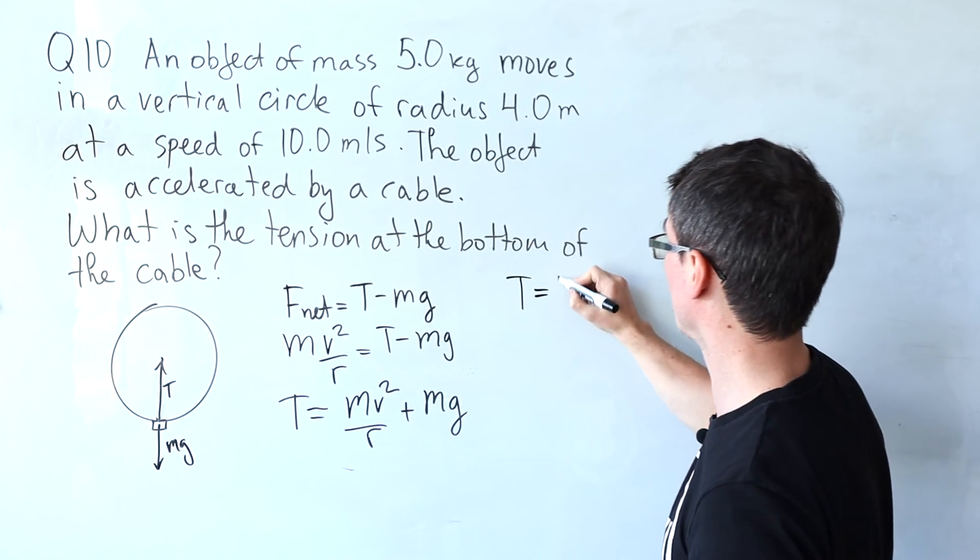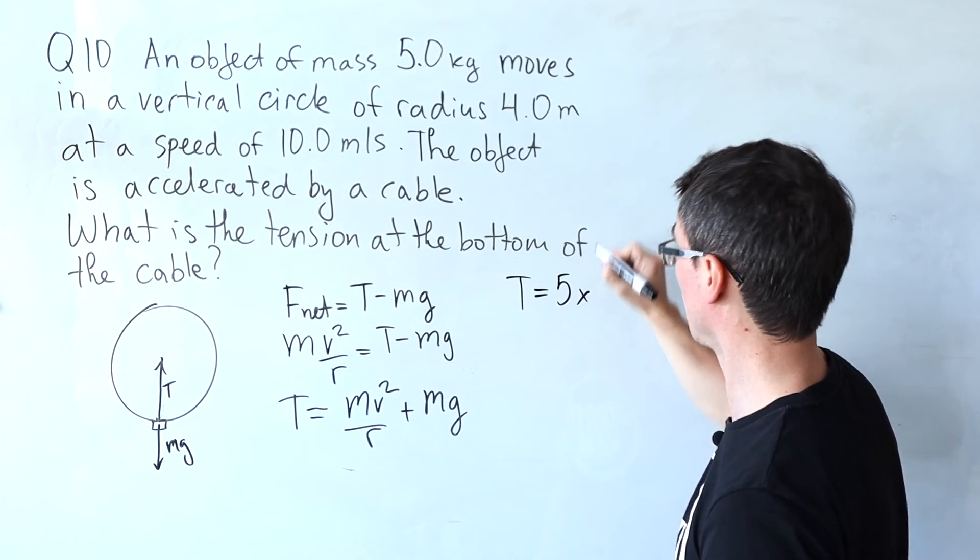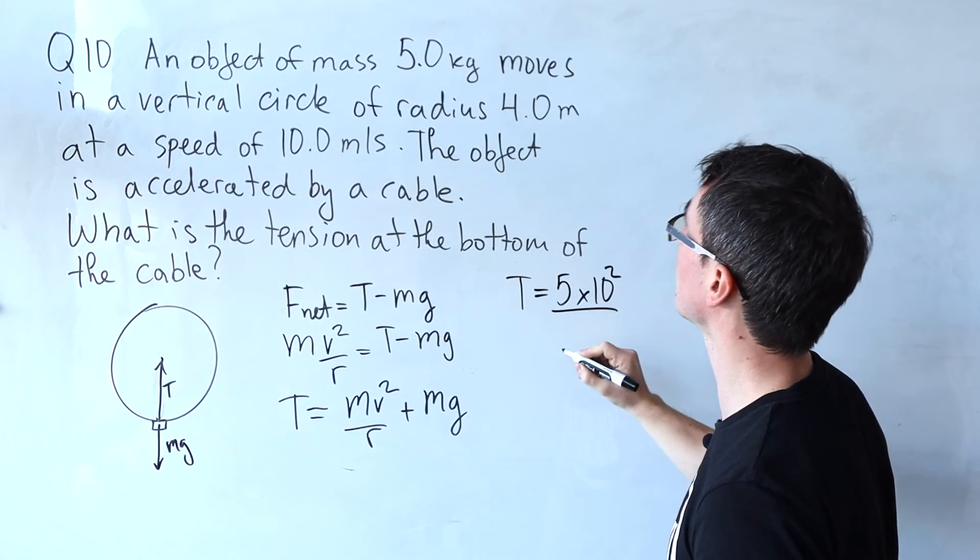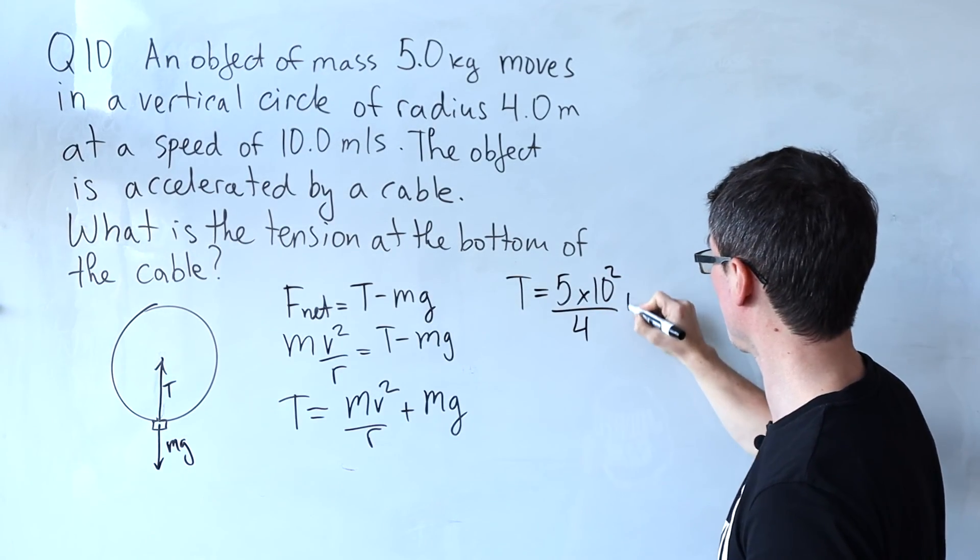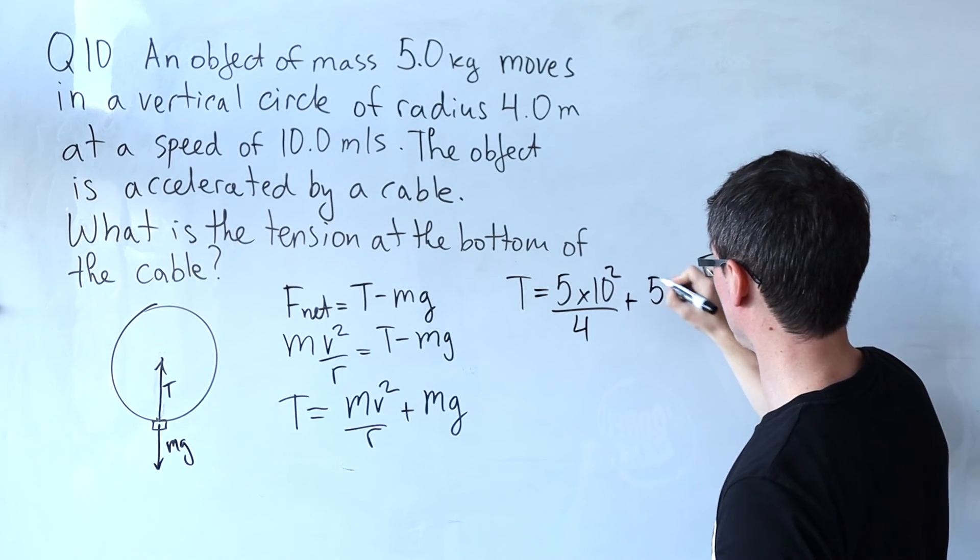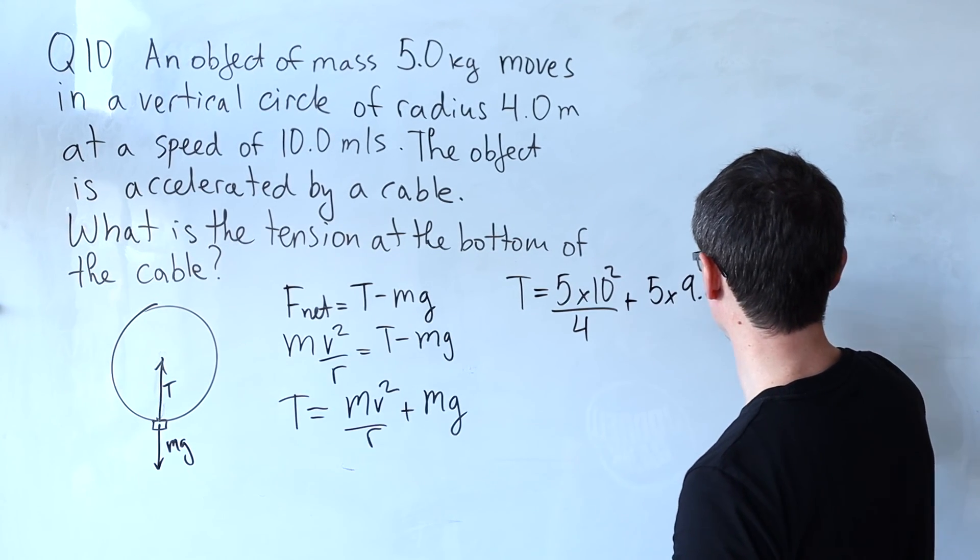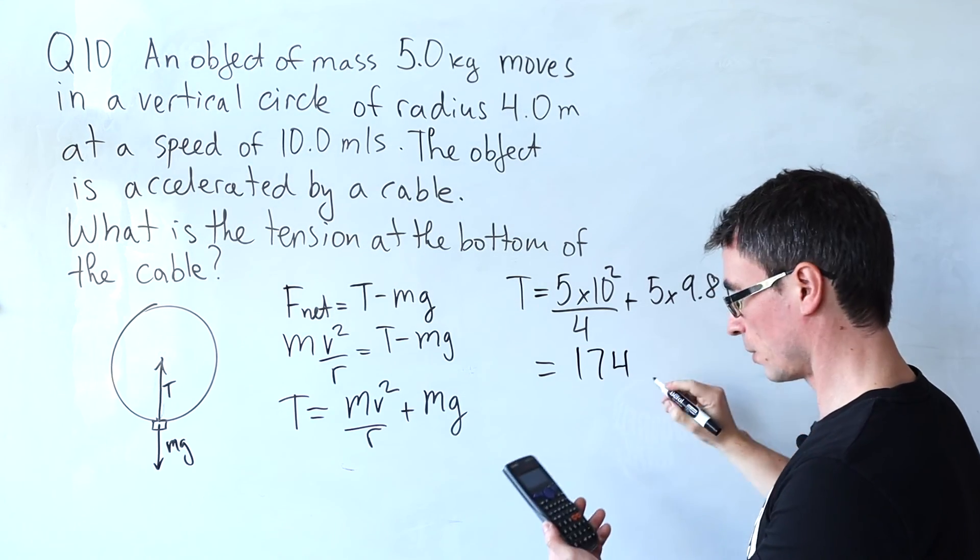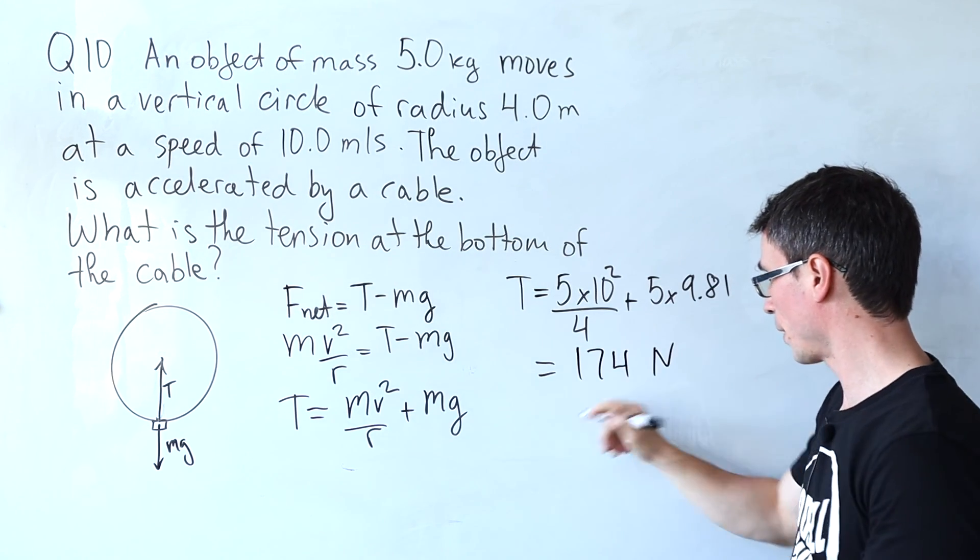Let's put in some numbers. T equals 5 times 10 squared divided by 4 plus 5 times 9.81. Putting these into a calculator we get 174 newtons or about 170 newtons up to two significant figures.